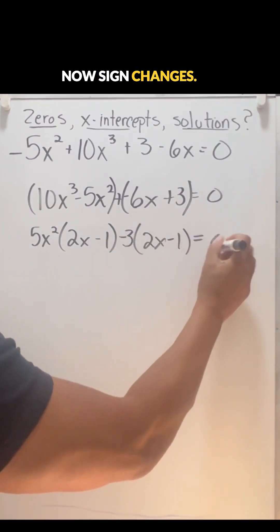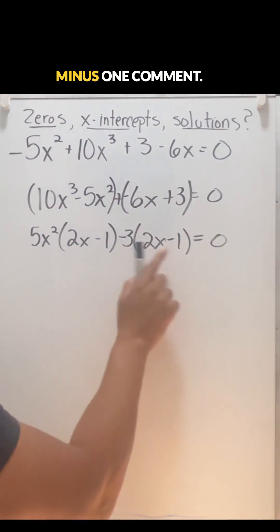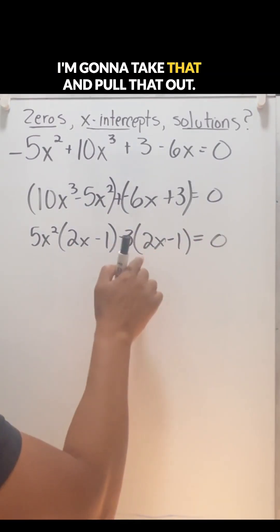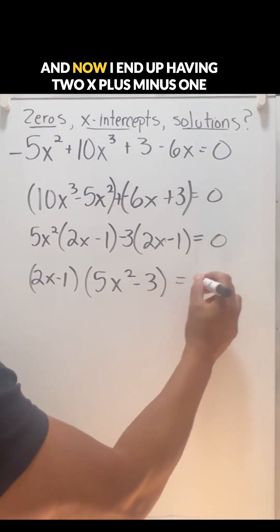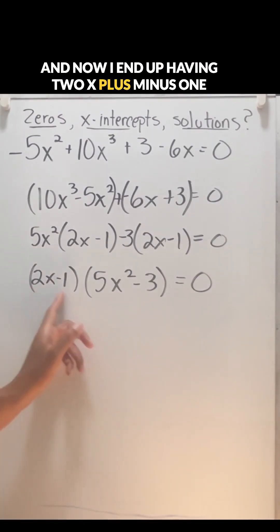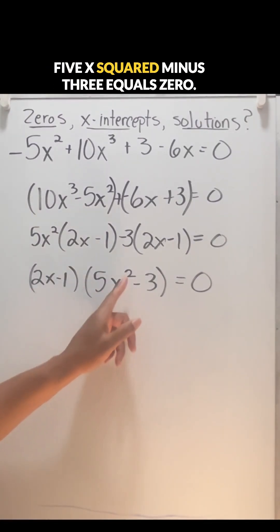Sign changes. Alright, so now they have the two x minus one in common. I'm going to take that and pull that out. Now I end up having two x minus one, five x squared minus three equals zero.